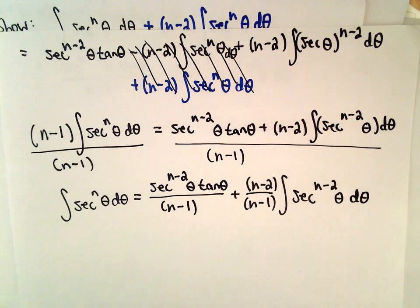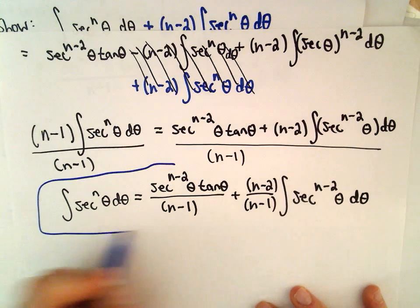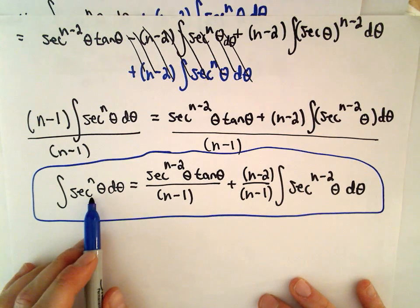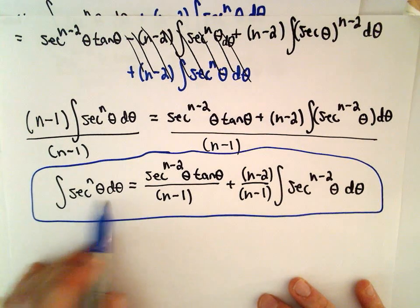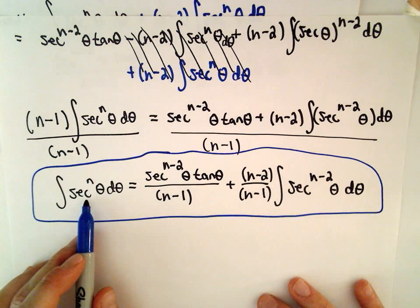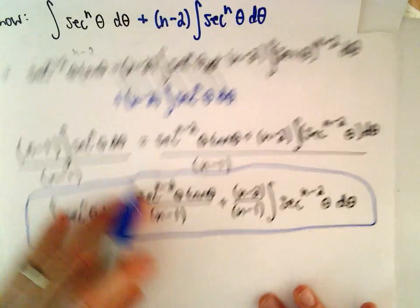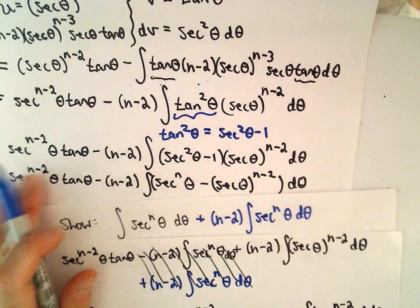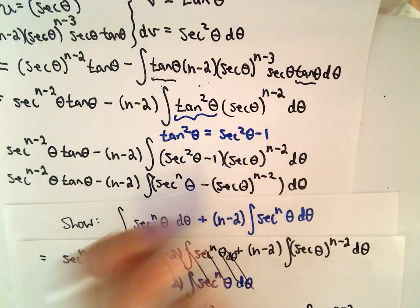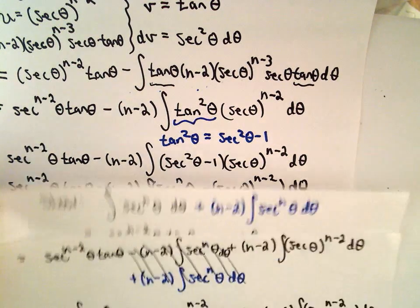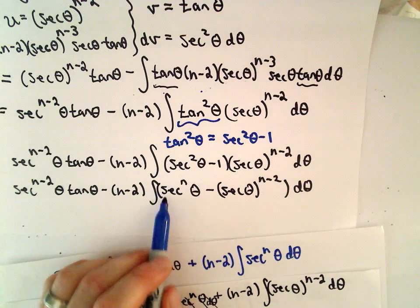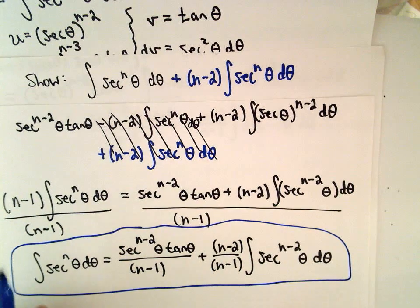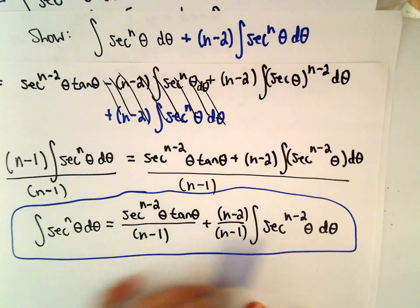Our justification is complete. The idea to prove this reduction formula is really just a matter of breaking sec^n down so you have a factor of sec² that allows you to do integration by parts. The only other key step is that after integration by parts you replace tan² with sec²-1. That's what makes the original integral reappear — you add it to both sides, divide by the coefficient, and that gives you the desired formula.